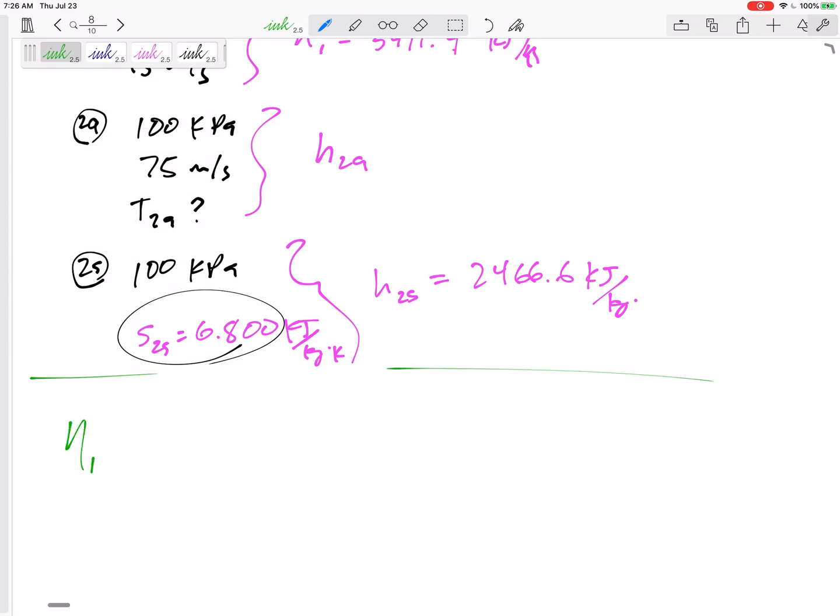I've got an equation in my notes: the isentropic efficiency of a turbine is work actual over work isentropic. Usually it's h1 minus h2 actual over h1 minus h2s. This is when we neglect everything else, when we neglected kinetic energy.